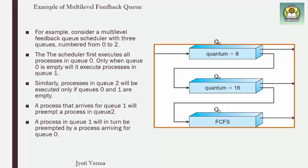For example, there are three queues: Q0, Q1, and Q2. In Q0, the time quantum is 8 milliseconds. In Q1, processes get a time quantum of 16 milliseconds. Q0 and Q1 use the round-robin algorithm, and Q2 uses first-come-first-serve. The scheduler executes all processes in Q0 first, then Q1, and finally Q2.